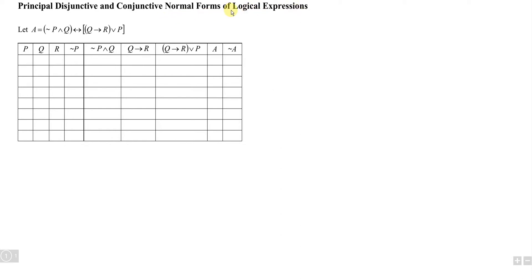Before we start, let's discuss what normal forms are. A normal form is a standard form that must fulfill certain criteria. First, we can only apply disjunction, conjunction, and negation. We are not allowed to use implication, if-and-only-if, or brackets within brackets.